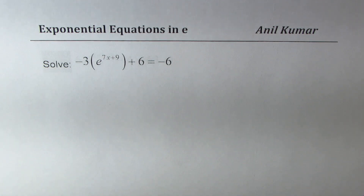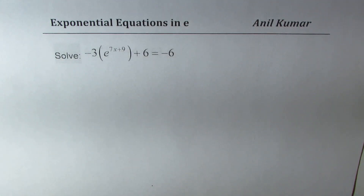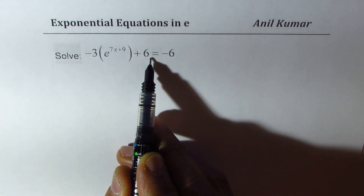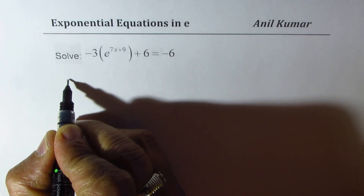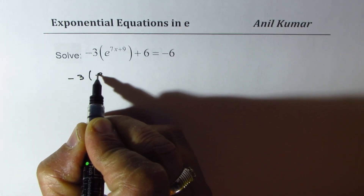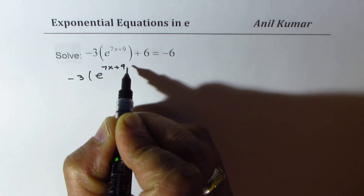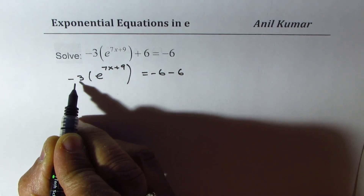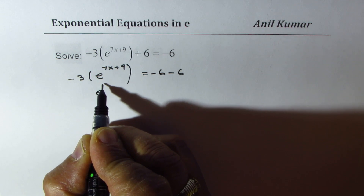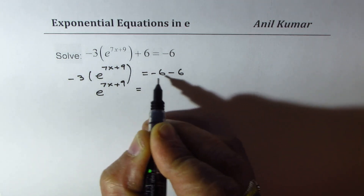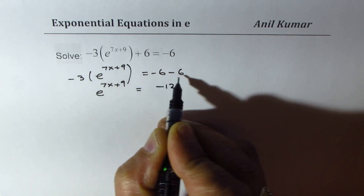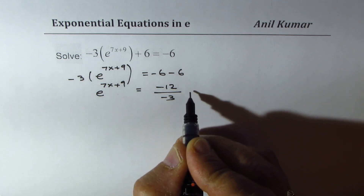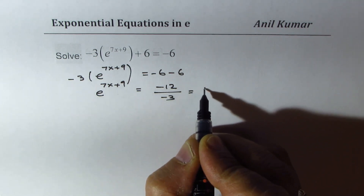Now the next equation is minus 3 times e to the power of 7x plus 9 plus 6 equals minus 6. Let's rewrite: minus 3 times e to the power of 7x plus 9. Taking 6 to the right side gives minus 6 minus 6, which is minus 12, then dividing by minus 3 gives e to the power of 7x plus 9 equals 4.